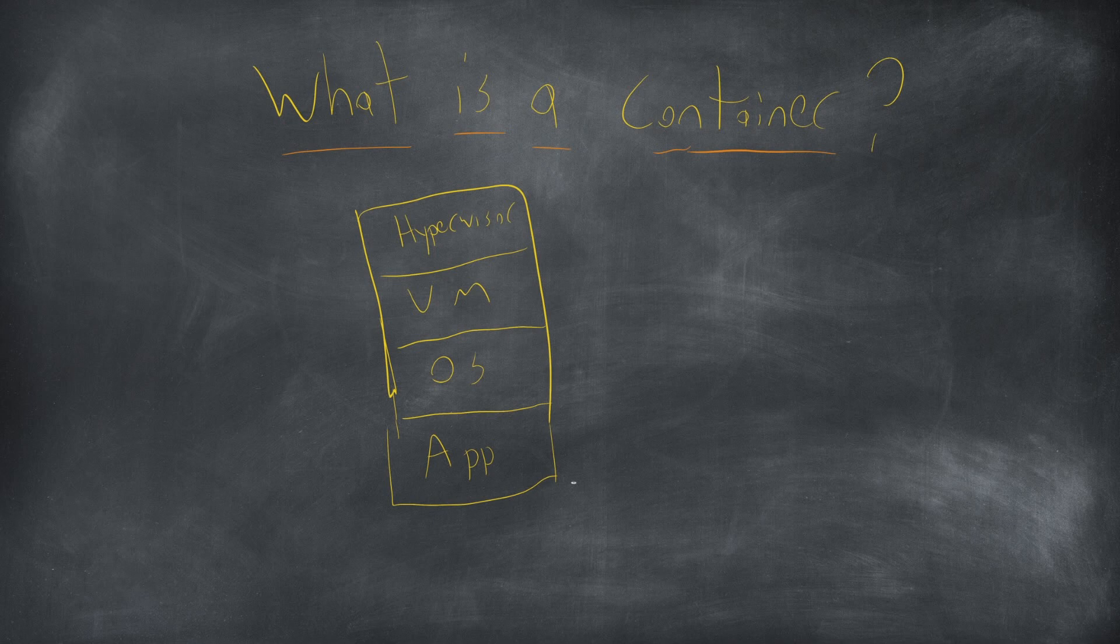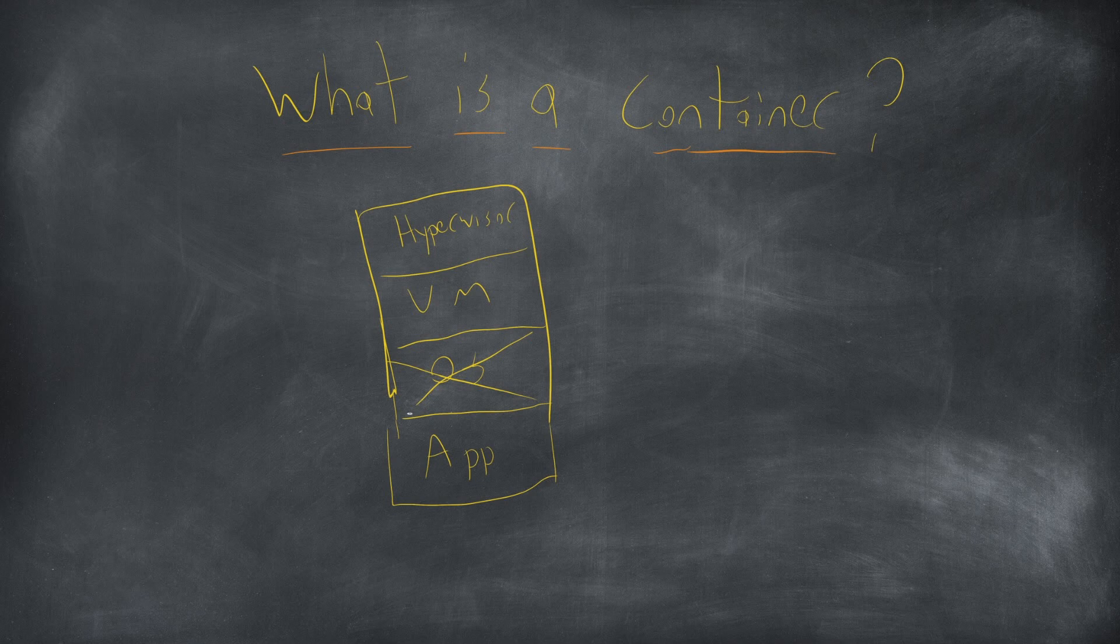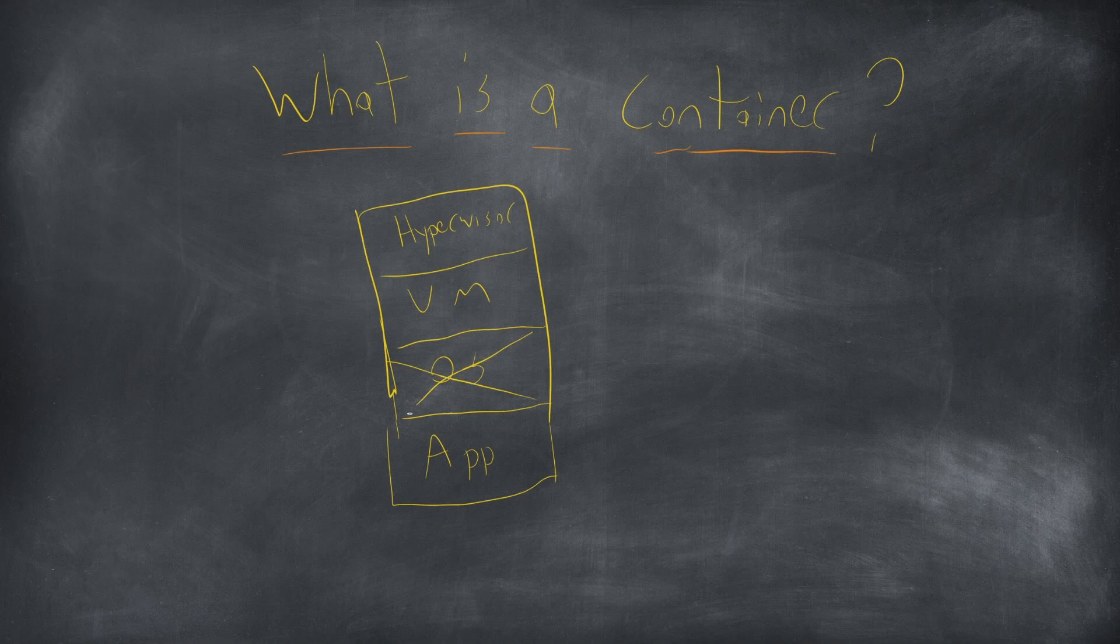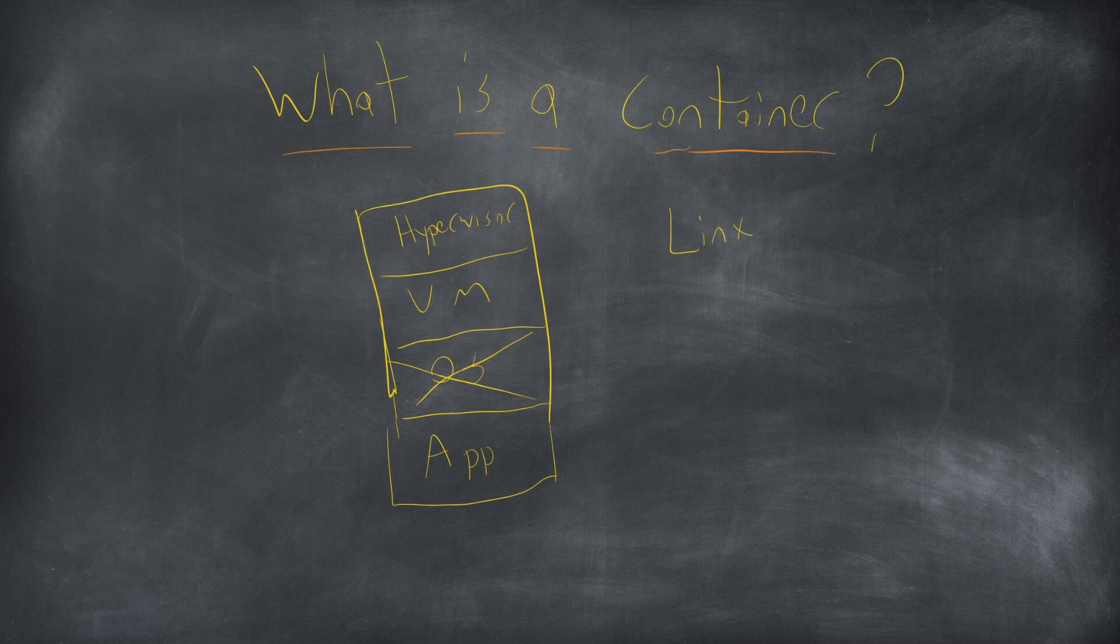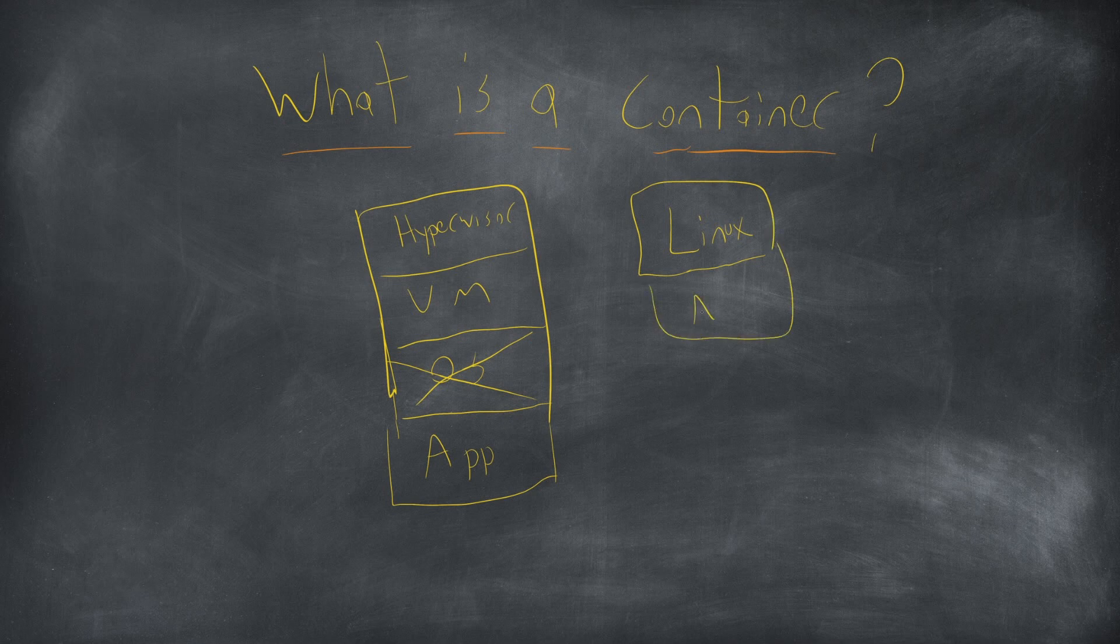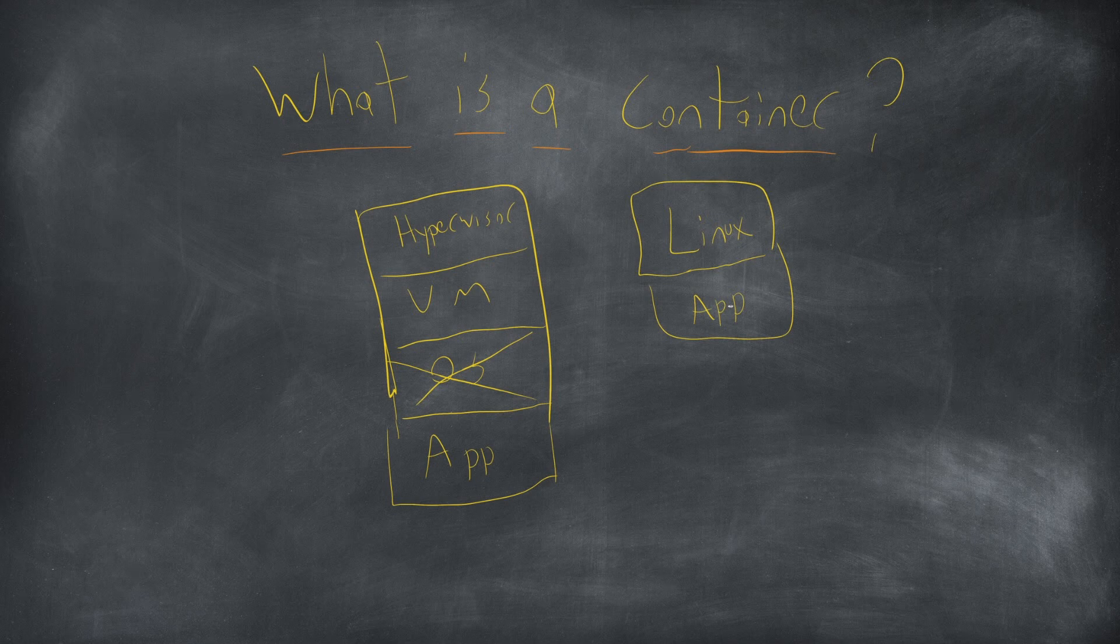So for a container what we're trying to do is we are eliminating the operating system layer and we do that by sharing the operating system bits with the container. In a Linux system this is pretty easy because a container is really just a bunch of Linux technologies such as namespaces to tie things together. So what we have here is we have our Linux and then we have our app that runs in the container and keeps everything nice and clean this way.